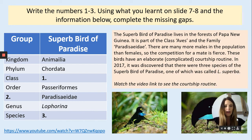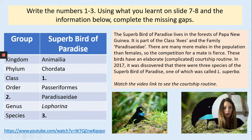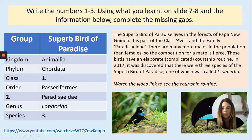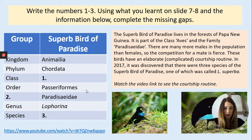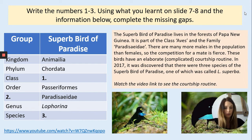Now I want you to have a go at applying this to a piece of text you've probably not come across before. Looking at this table, there are numbers 1, 2, and 3 — write down the words that go in those spaces; all the answers are in the text. This topic often scares people in exams and they lose marks purely because they see unfamiliar words like 'passeriformes' and think they can't answer. But all you need to do is infer the answers from the text. Pause the video and have a go at answering numbers 1, 2, and 3.